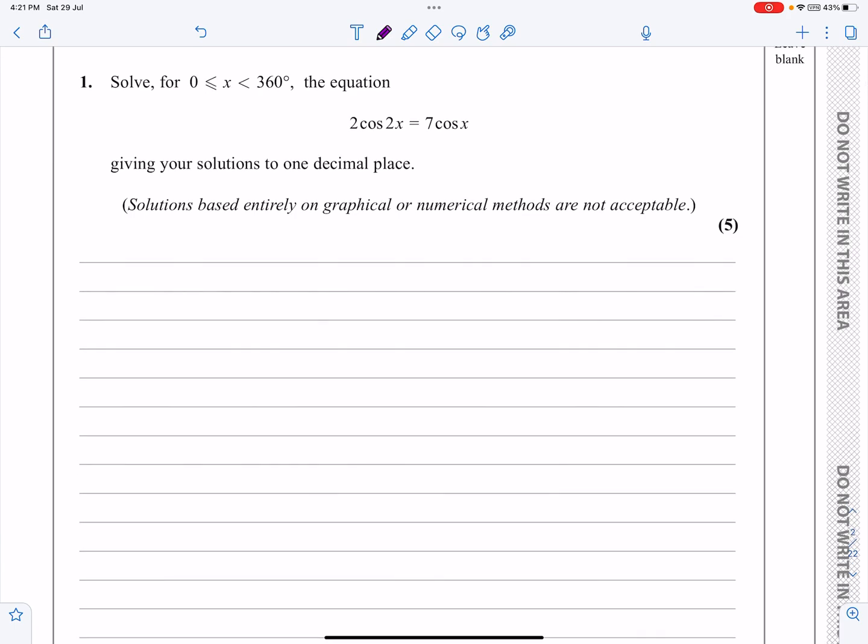So you absolutely have to learn your trig identities. You need to know them inside out, upside down, back to front, so that when I'm looking at this one, let's just make a start. It says 2 cos 2x is equal to 7 cos x. Straight away, we can see that that's cos 2a.